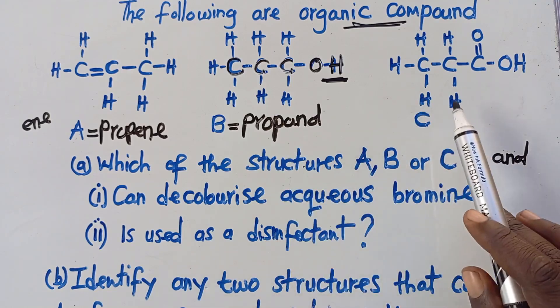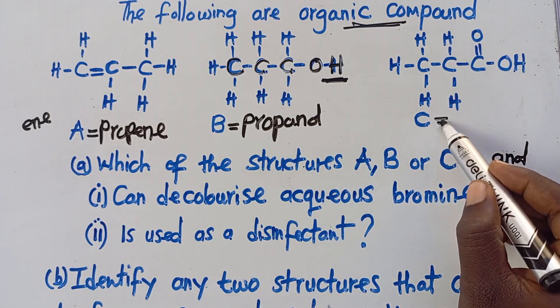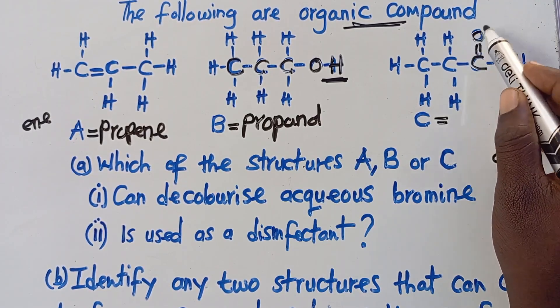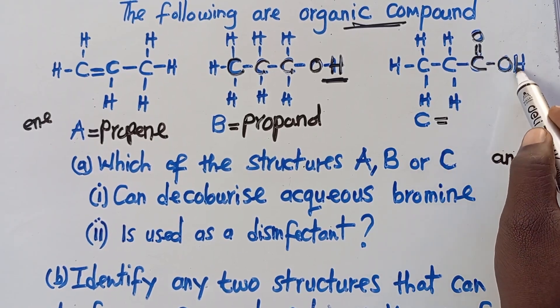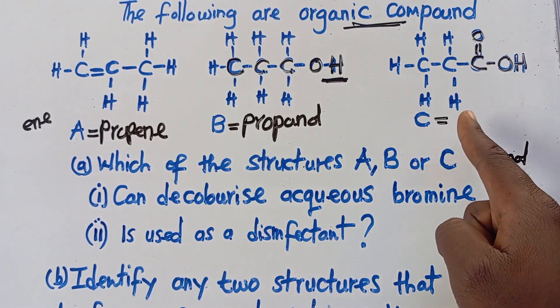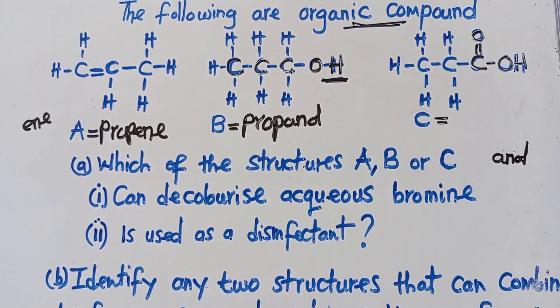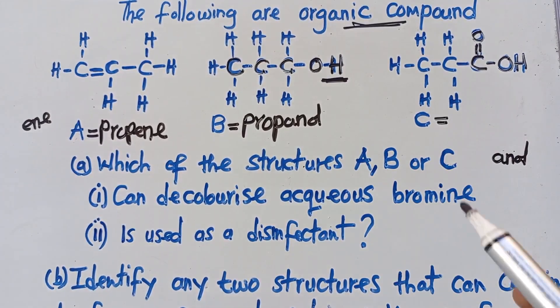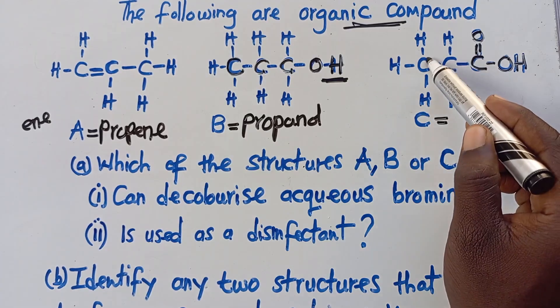We move to this one that is here. What is the name of this one? This one is having C double bond O. Then we've got OH. What is the name of that functional group? That is called a carboxyl group. So this is to tell you that this is a carboxylic acid.